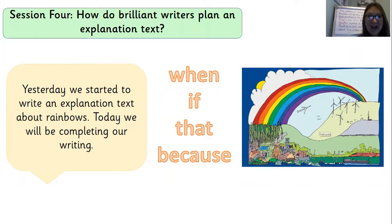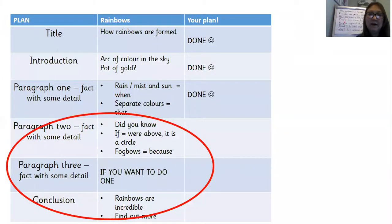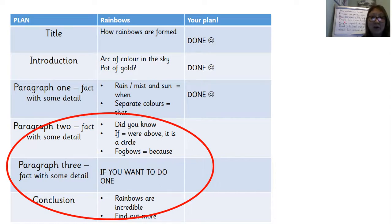Today we are going to be finishing our rainbow's explanation text. Yesterday we started to write it and we wrote our title, introduction, and paragraph one. Today we are going to be completing our writing, making sure we still use 'when', 'if', 'that', and 'because' — our conjunctions for focusing on this week. It's really important that we use our plans for our writing, so make sure you've got your plan out now. As you can see on my screen, we've already done the first three parts, and today we're going to be working on the second paragraph, a third paragraph if you want to write one, and our conclusion.